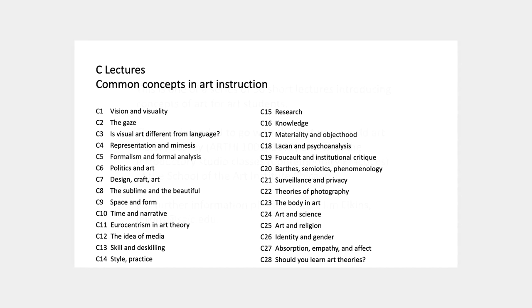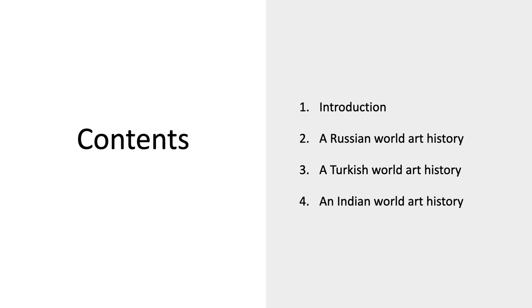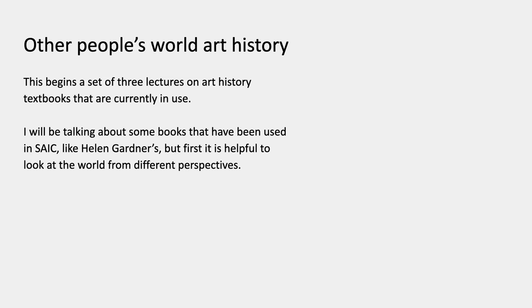Welcome to Theories and Problems in Visual Art. This is Lecture 19 in the History Series on Art History Textbooks in Other Countries. I've just one slide for an introduction, then we're going to look at a world art history written in Russia, one written in Turkey, and one written in India. The idea is to look at other people's world art histories before we spend time looking at ones that are generally assigned in North America.